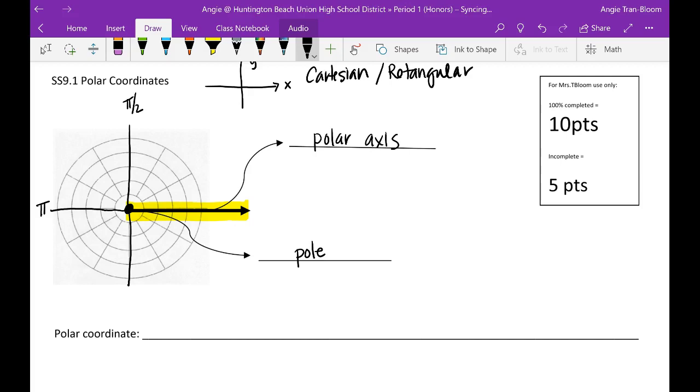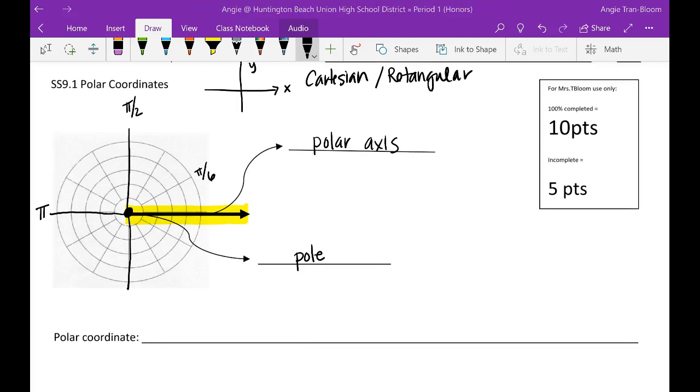This right here is going to be π over 6. Now how do I know? Well I'm taking the first quadrant which is what, 90 degrees, right? And look, this particular grid is divisible by 3, so I know each one is about 30 degrees. So 30 degrees in radians is about π over 6. So this is π over 3.